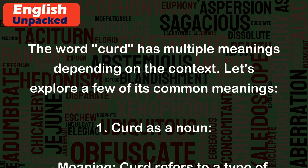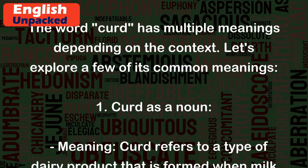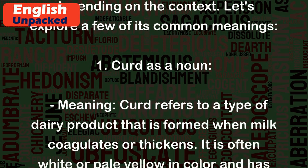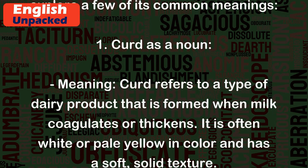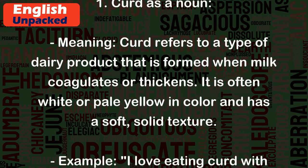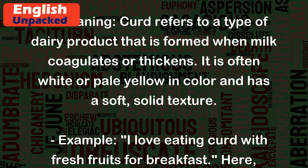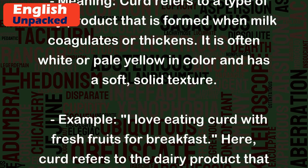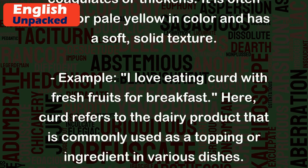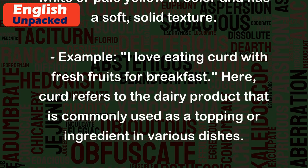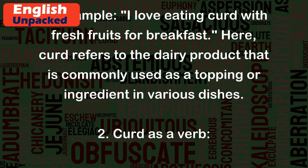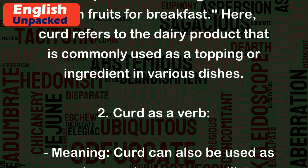1. Curd as a noun. Meaning: Curd refers to a type of dairy product that is formed when milk coagulates or thickens. It is often white or pale yellow in color and has a soft, solid texture. Example: 'I love eating curd with fresh fruits for breakfast.' Here, curd refers to the dairy product that is commonly used as a topping or ingredient in various dishes.